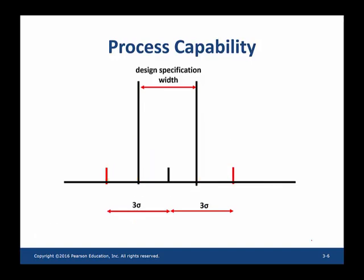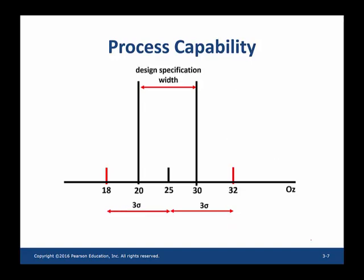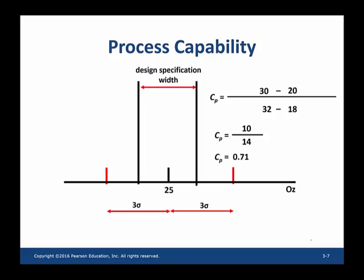The question is how can we quantify this process capability idea? By comparing two measures: the design width and the six sigma distance. The process capability ratio CP is the design specification width divided by the six sigma distance. Plugging in values: the design specification width is upper minus lower specification, which is 10, and the six sigma distance is 32 minus 18, which is 14. So CP = 10/14 = 0.71.